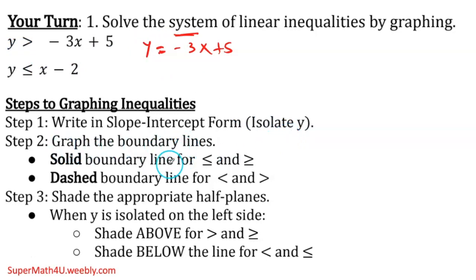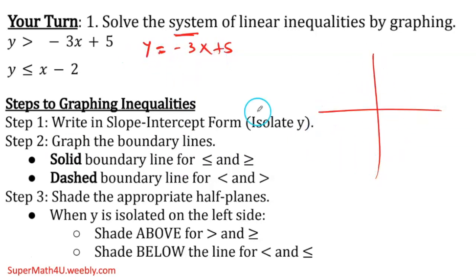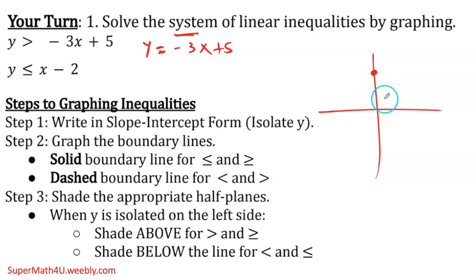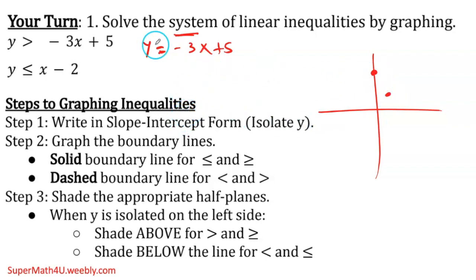Then I graph the boundary lines — basically, drawing the line. The y-intercept is 5. My slope is negative 3, or negative 3 over 1. So I go down 3 and 1 to the right. Those are the two points I'm going to use to graph this line.